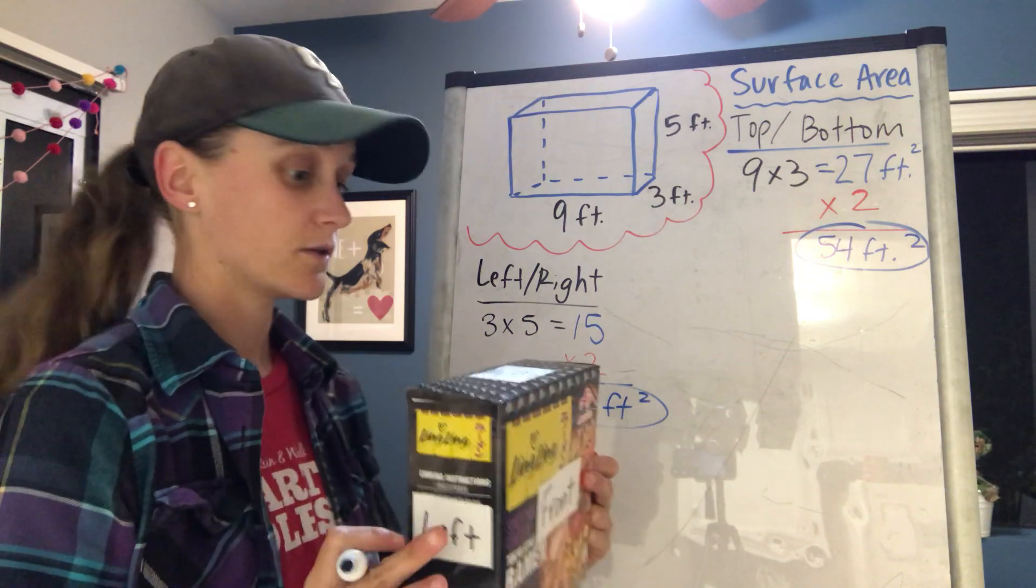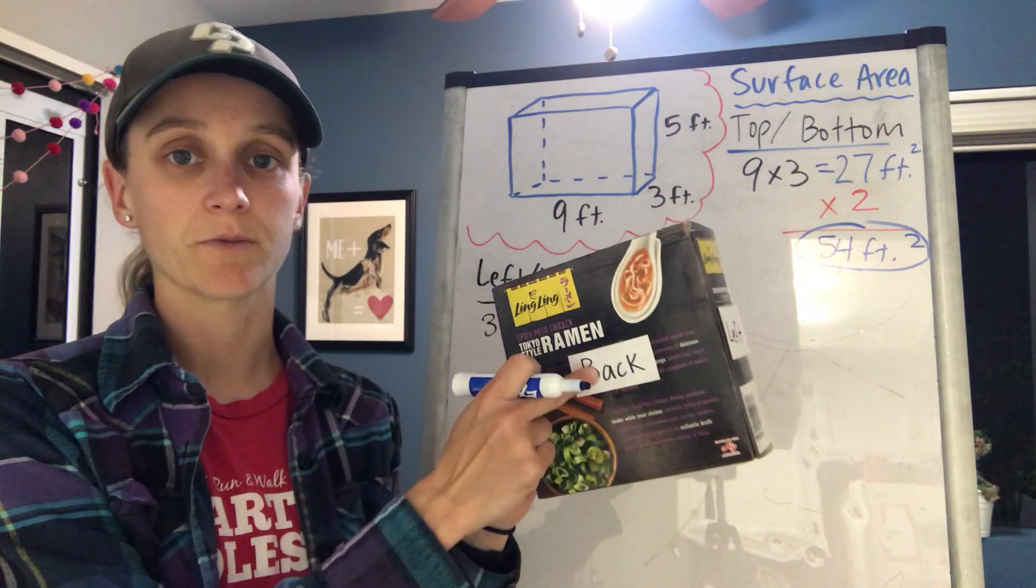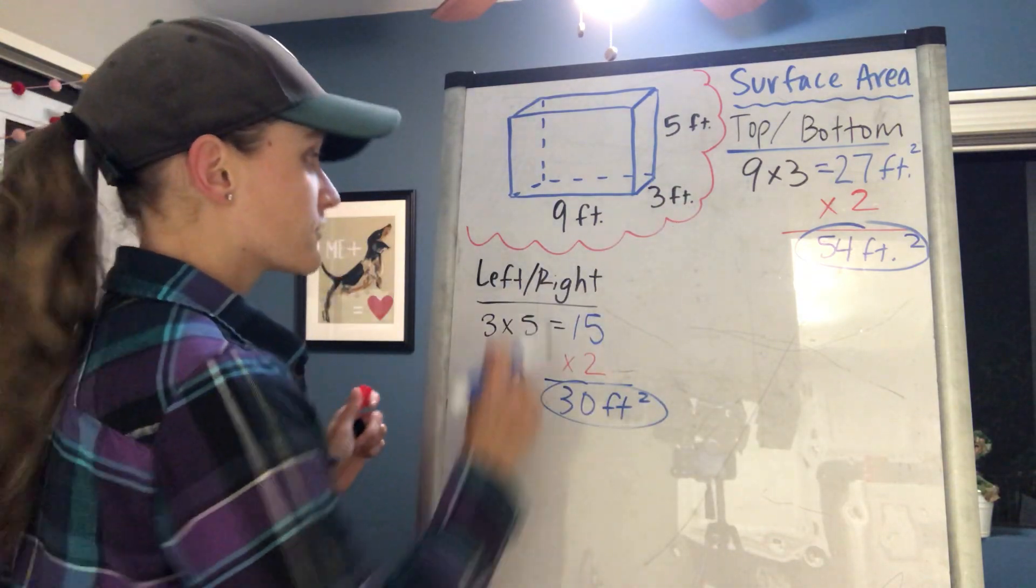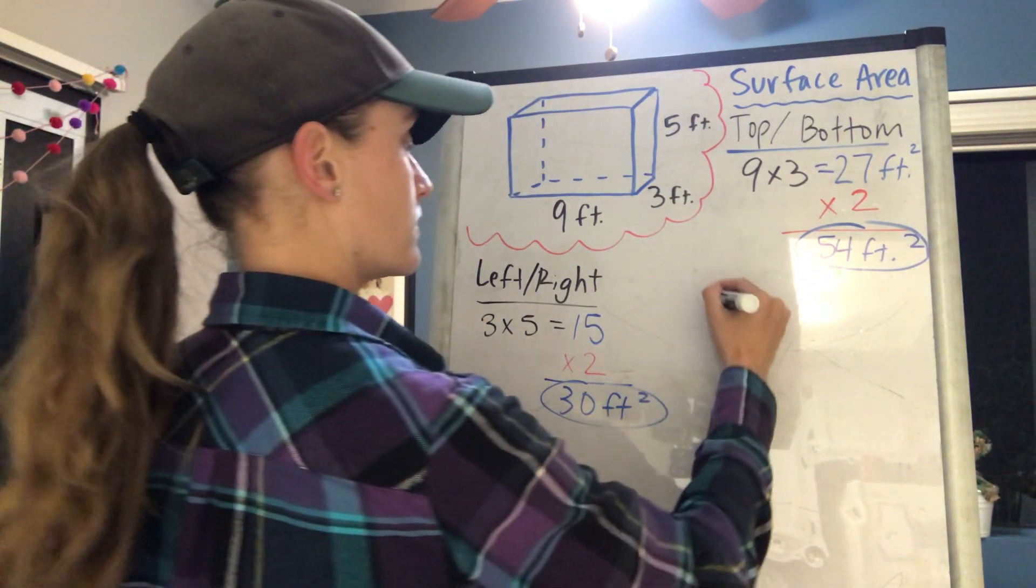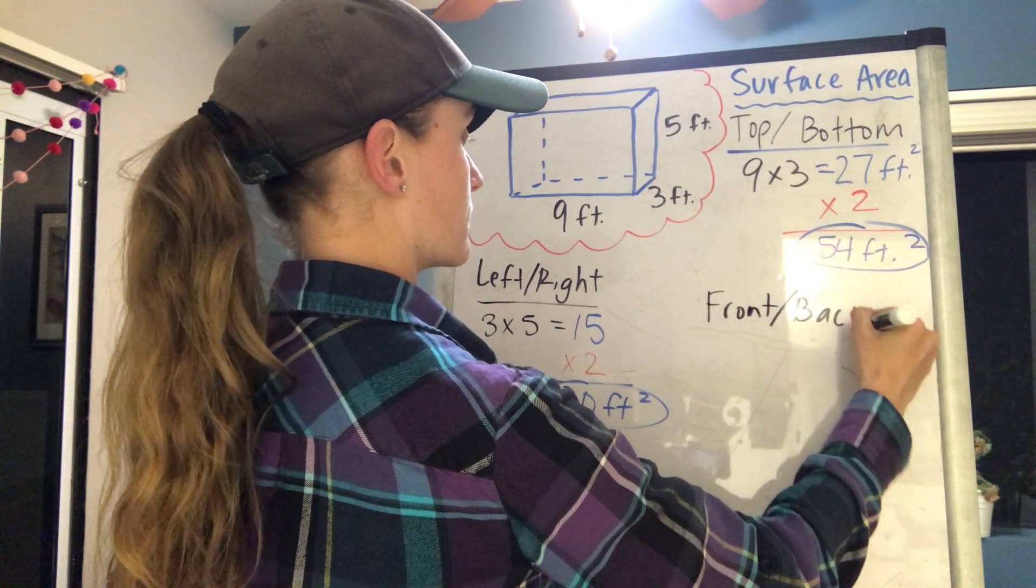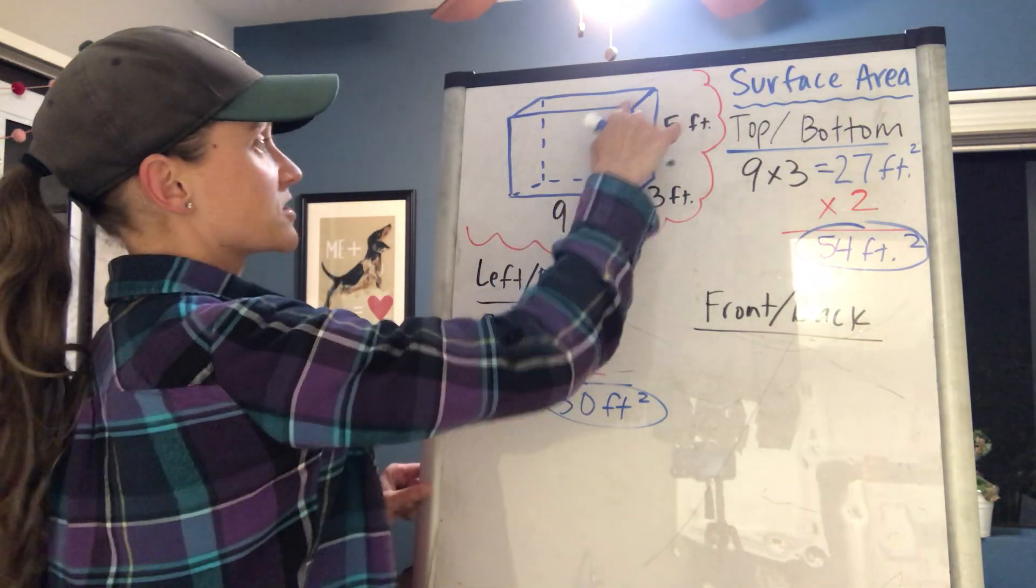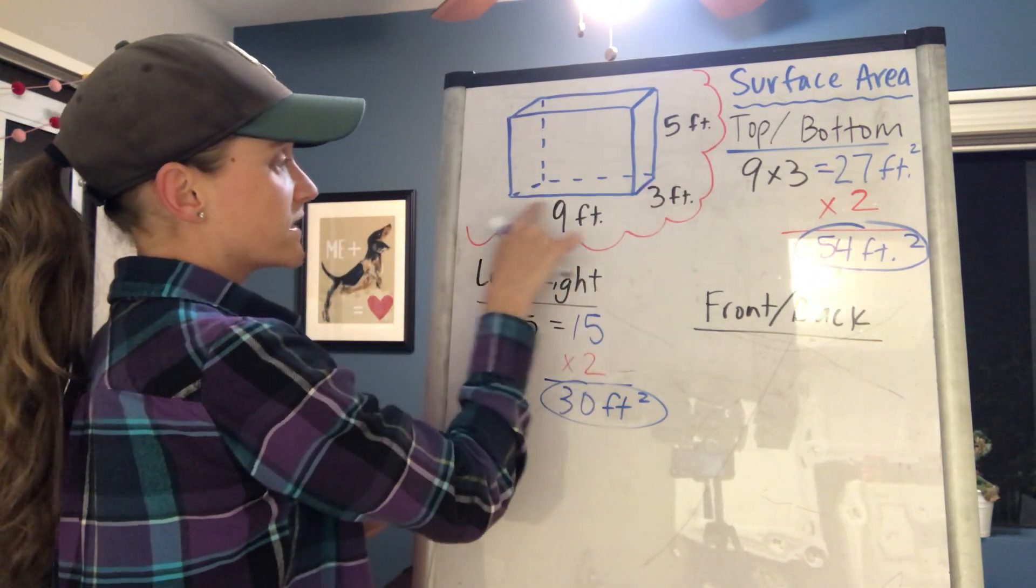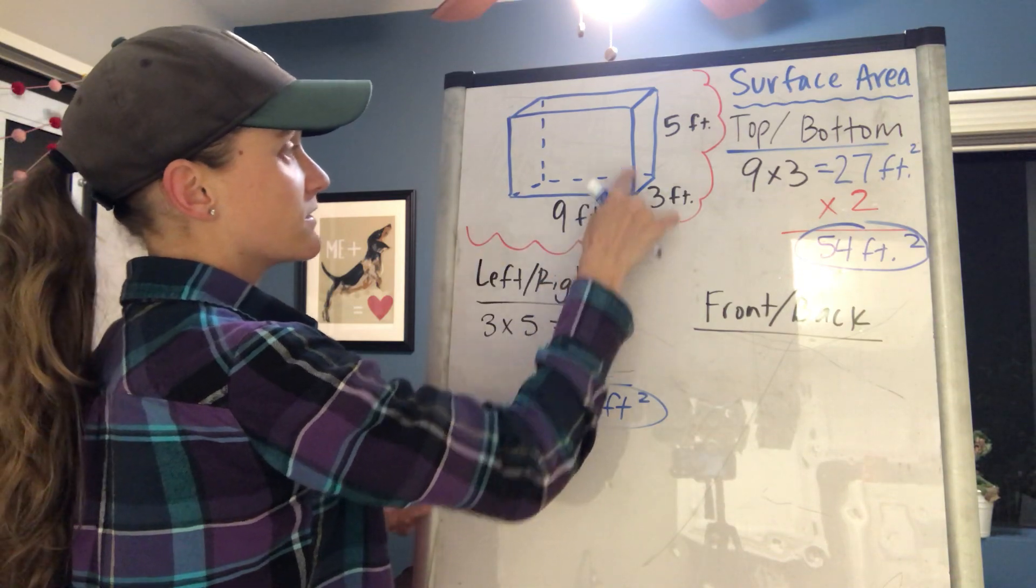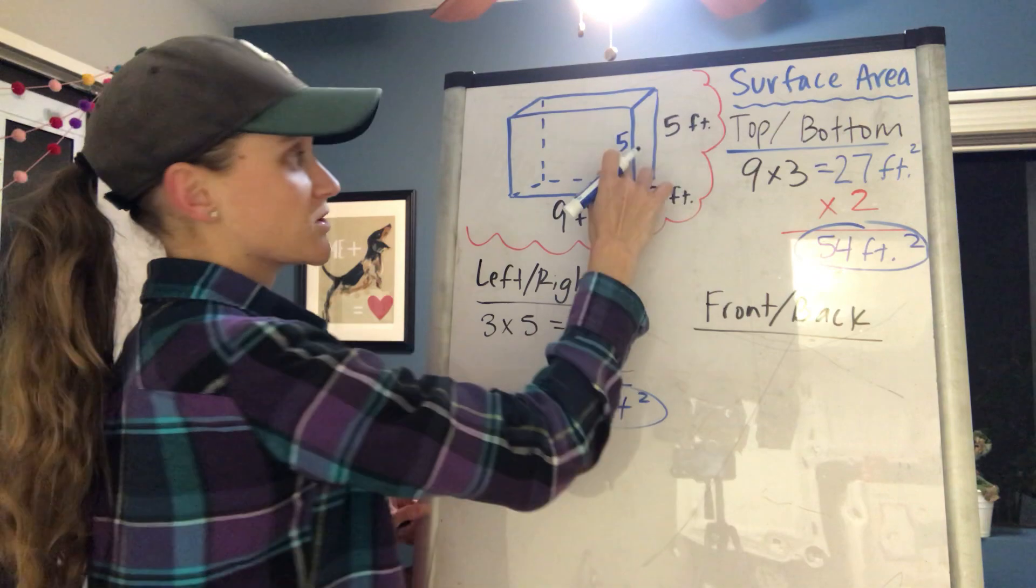So for the front here, let me write front and back. Okay, so for the front side here, it's this big one right here. I can see that's 9 feet, and then this side here is gonna be 5 feet, because if this back one is 5, this one's also gonna be 5.